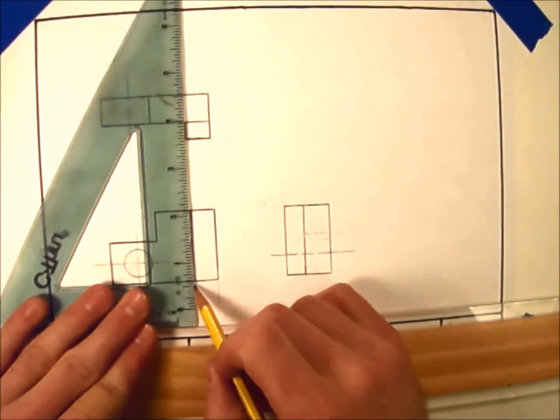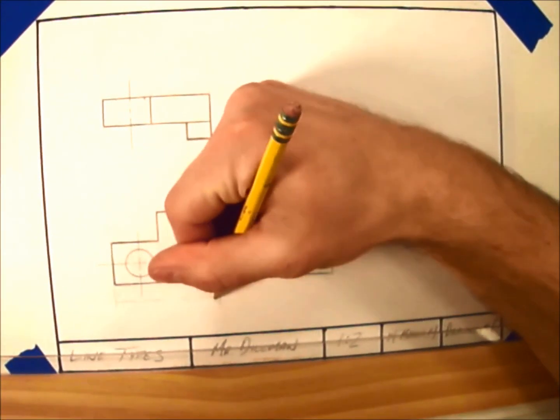When it's time to dimension the object, the object lines are almost always the ones the dimensions are referring to.